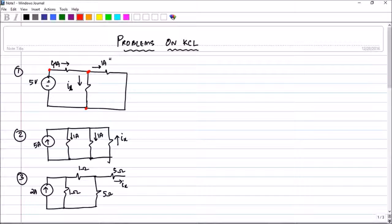Now, let us do this problem. I would like to select this node. So let me call it node number 1. Applying KCL at node number 1. What will I get? So I am having 4 amperes which is entering the node. So I will put a minus sign in front of that. And I am having Ix which is leaving the node plus Ix. And 1 ampere is also leaving the node.